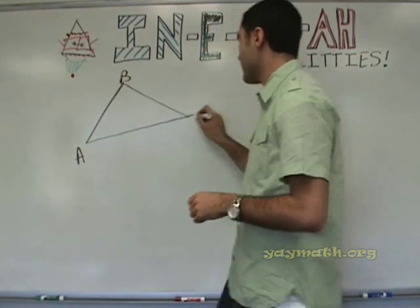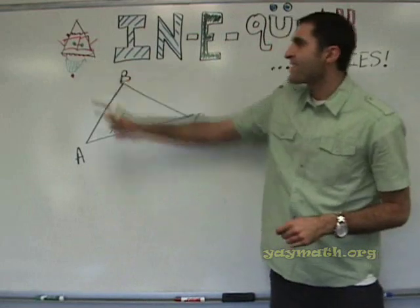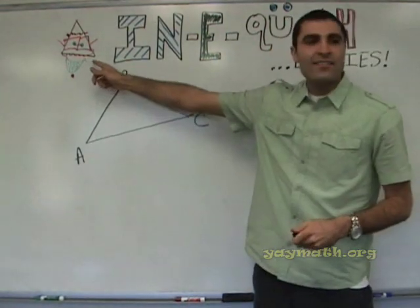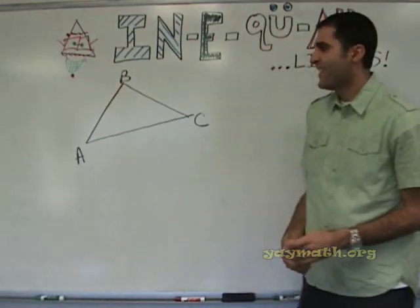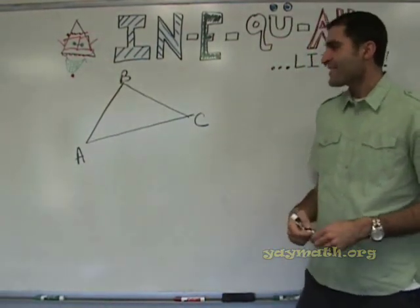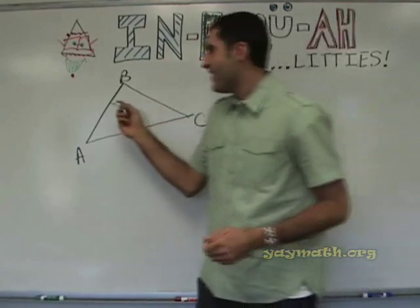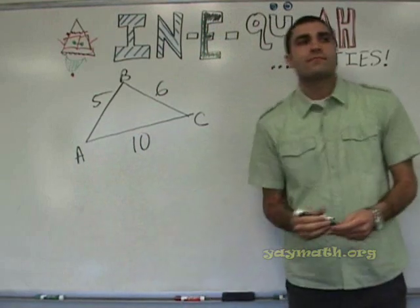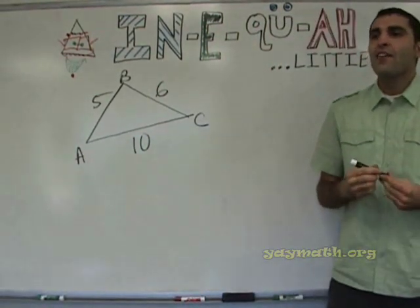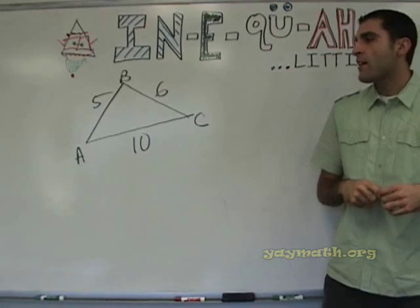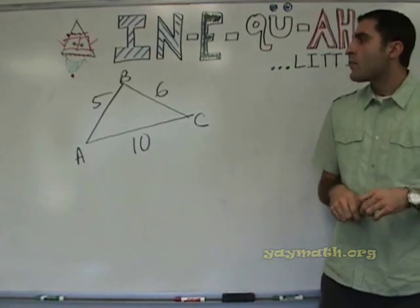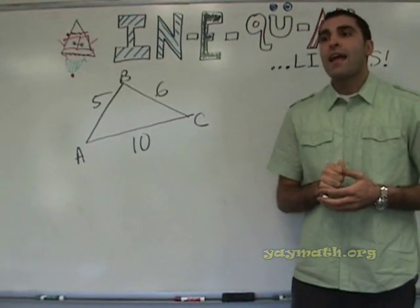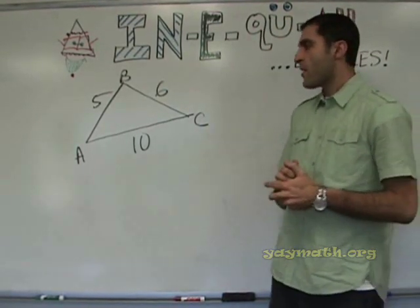A, B, C — this is a triangle. What is this triangle called? So five and six and ten. We have the triangle with sides five, six, and ten — we have it drawn. So what's the smallest side? AB. Right on. So AB is the smallest side.